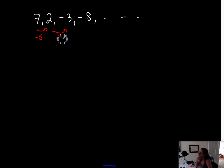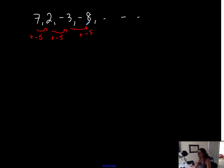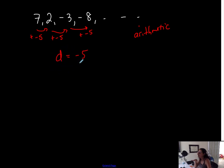To get from 2 to negative 3, I'm subtracting 5. To get from negative 3 to negative 8 — so this looks like I am subtracting a number from each term to get to the next one, which means the same thing as adding a negative number. So I'm adding negative 5 to each term to get to the next term, which is constant. That means I have a common difference — it's arithmetic. The common difference is negative 5. Even though you're subtracting a number, the common difference is whatever number you're adding, so here it's negative 5.